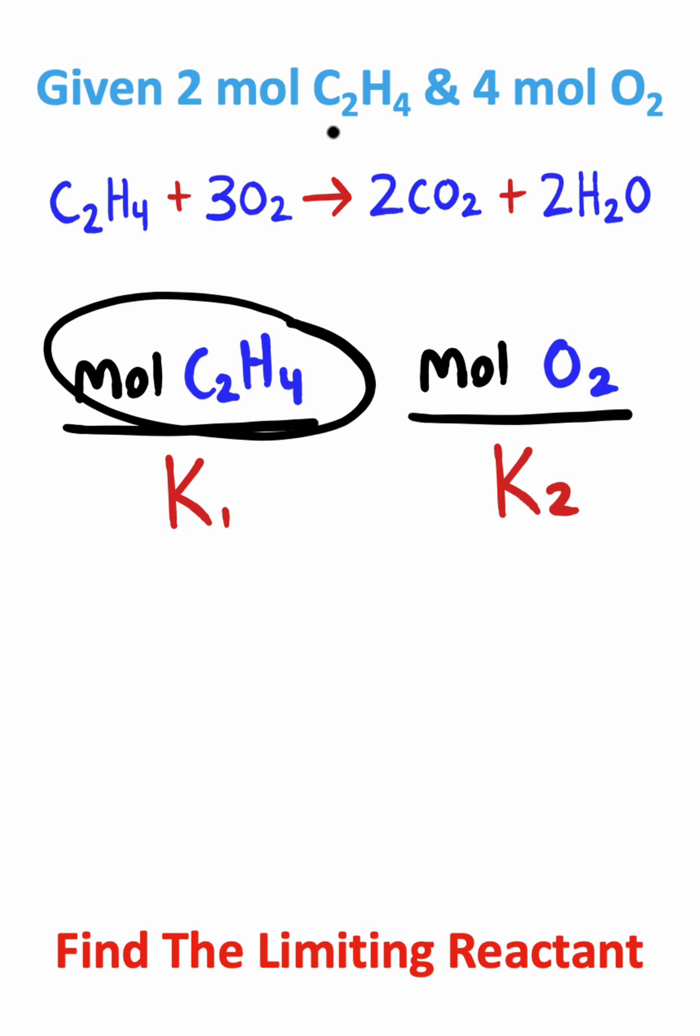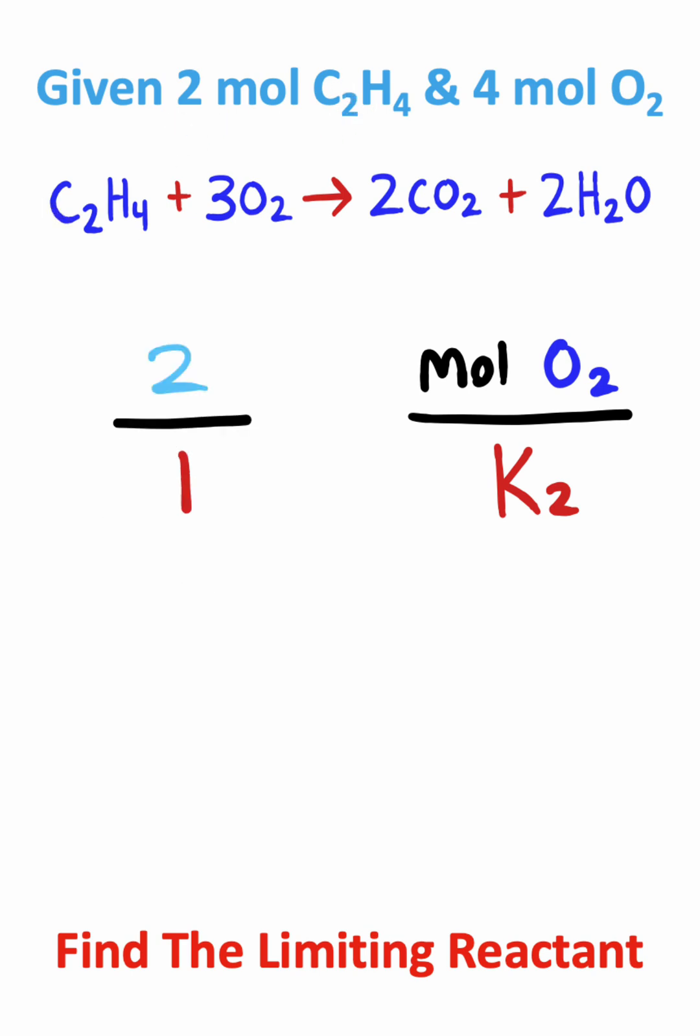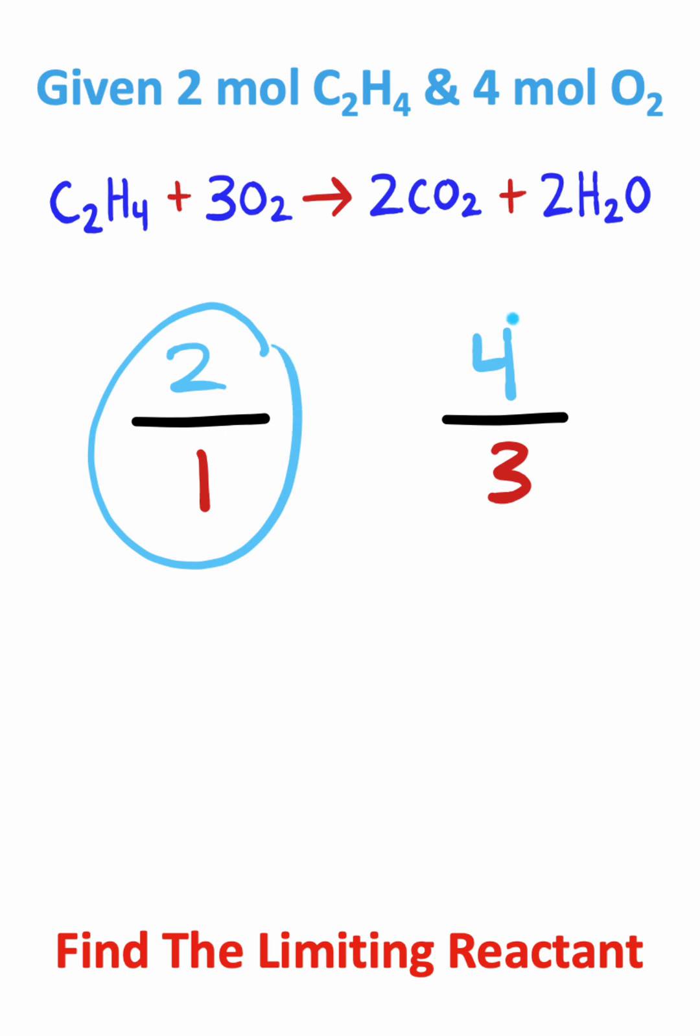Notice for C2H4 we are given 2 moles of this substance, and for the coefficient, 1. Now notice for oxygen gas we are given 4 moles, and the coefficient in front of O2 is 3. So we have 2 over 1 and 4 over 3, which as a decimal is going to be 2 and 1.33 repeating.